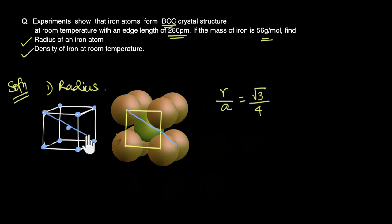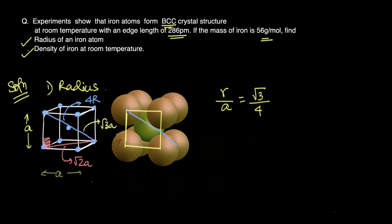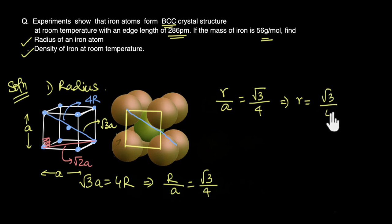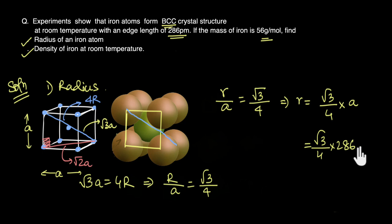The body diagonal distance comes out to be equal to 4R. This body diagonal can also be written in terms of the edge length as √3 of A. So √3A = 4R, meaning R/A in BCC will always be equal to √3 by 4. In this question, the radius R will be equal to √3 by 4 into A, which is 286 picometers.